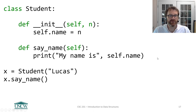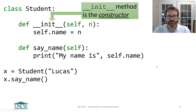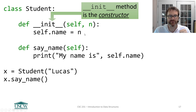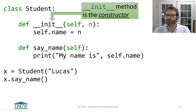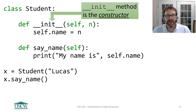Let's explain what we've done here. The first thing you'll notice is we've added this new method. It looks like a function, but it has a very specific name that is predetermined by Python: underscore underscore init underscore underscore. These are two underscores crammed together, lowercase 'init'. This is a baked-in thing in Python — you just have to memorize it.